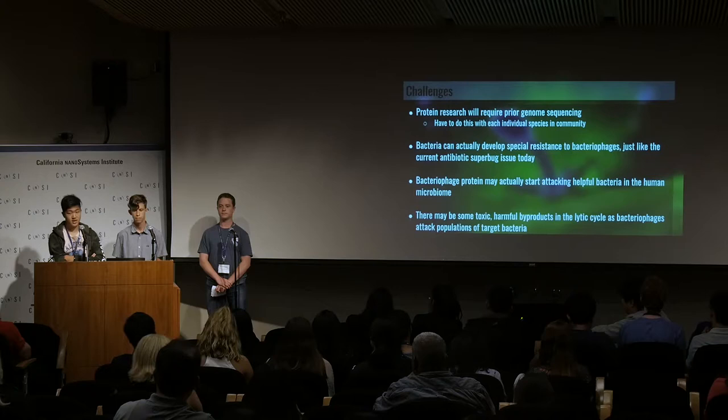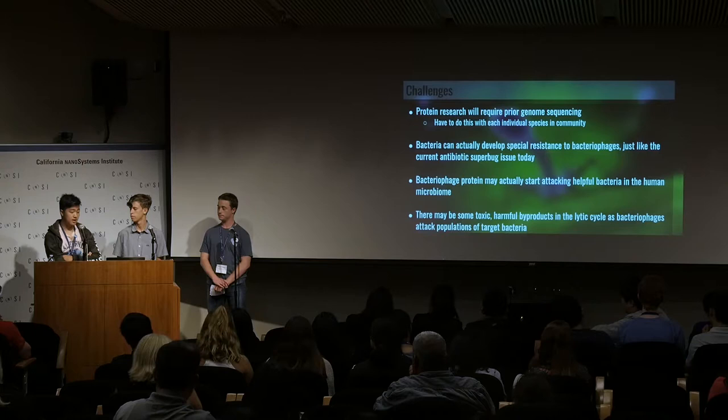Also, just like bacteria can develop resistance to antibiotics and become superbugs, there is actually evidence that bacteria can develop the same kind of resistance to bacteriophages. Another problem is that proteins on different cell membranes can actually all be the same. So if we're not careful, we might find a receptor protein that also binds to helpful bacteria, and the bacteriophage will start attacking helpful bacteria in the human microbiome, disrupting that delicate ecosystem.